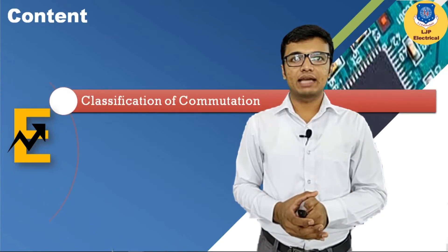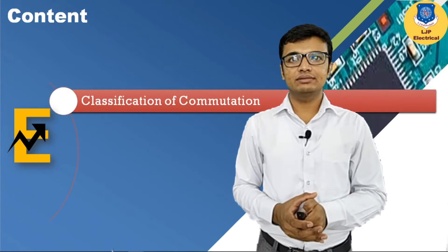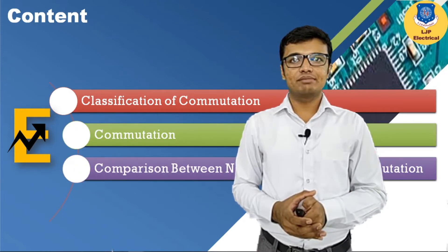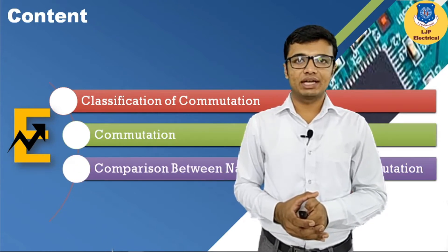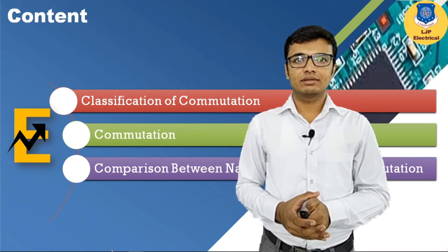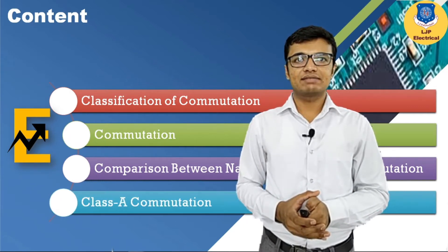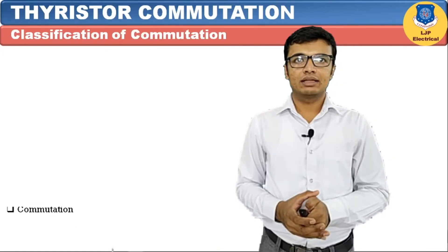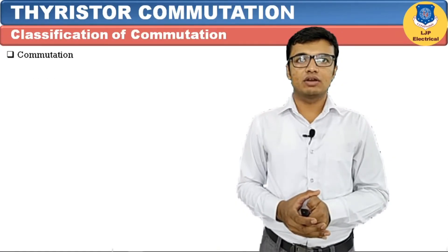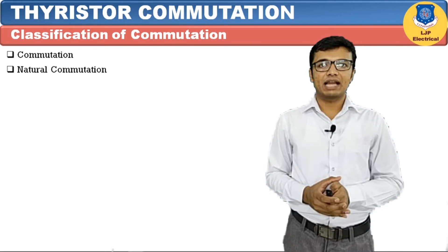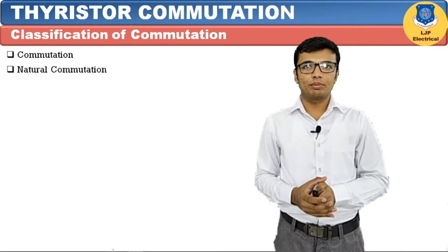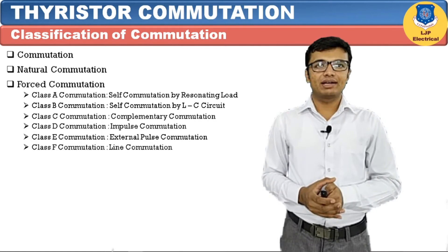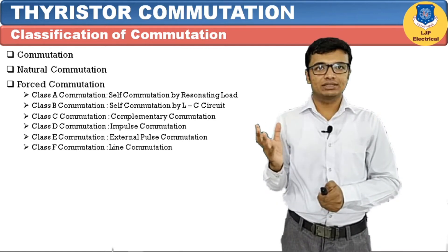In this topic we will learn classification of commutation, natural commutation, comparison between natural commutation and forced commutation, and Class A commutation. Commutation can be classified in two ways: natural commutation and forced commutation. Forced commutation has different types, starting with Class A commutation.